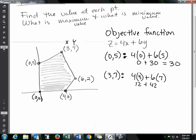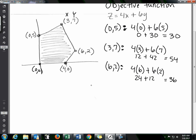And then at 6,2, we have 4 times 6 plus 6 times 2, that's 24 plus 12, so that equals 36.